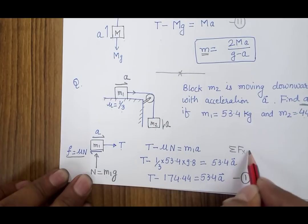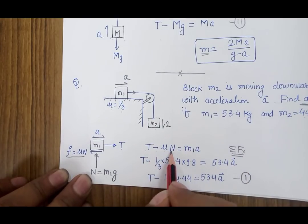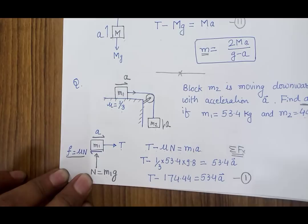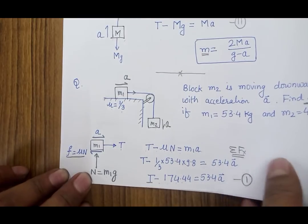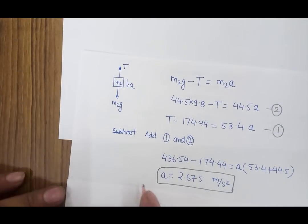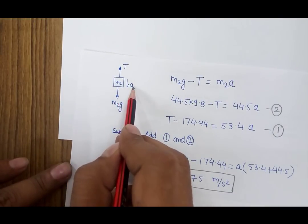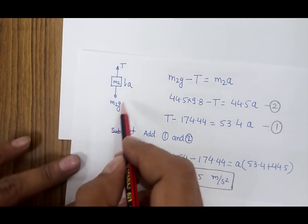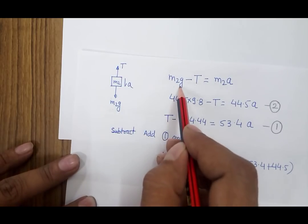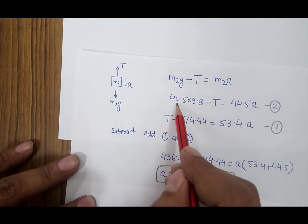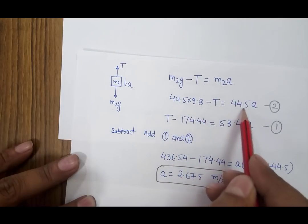For the horizontal forces on M1: T minus mu times N equals M1 times a, giving T minus 174.44 equals 53.4a. For mass M2 moving downward (positive direction): M2g minus T equals M2a, giving 44.5 times 9.8 minus T equals 44.5a.